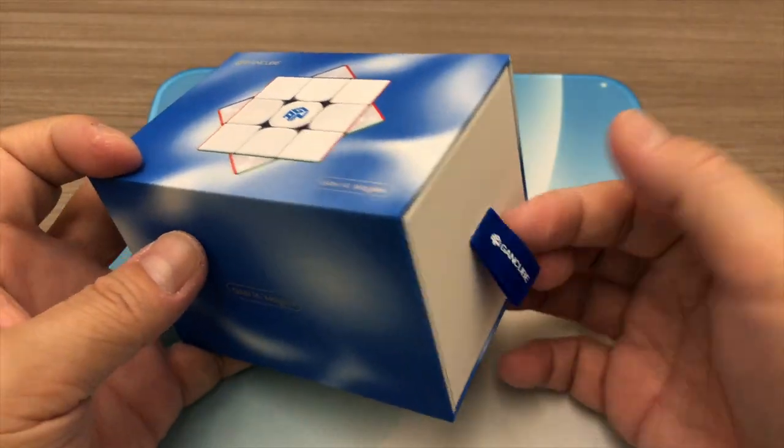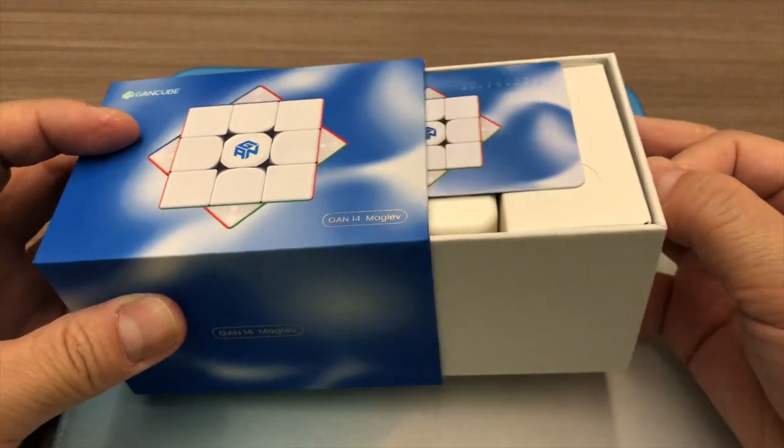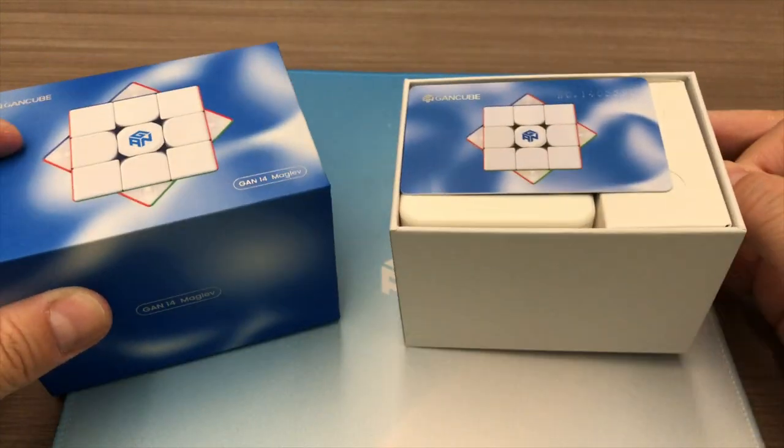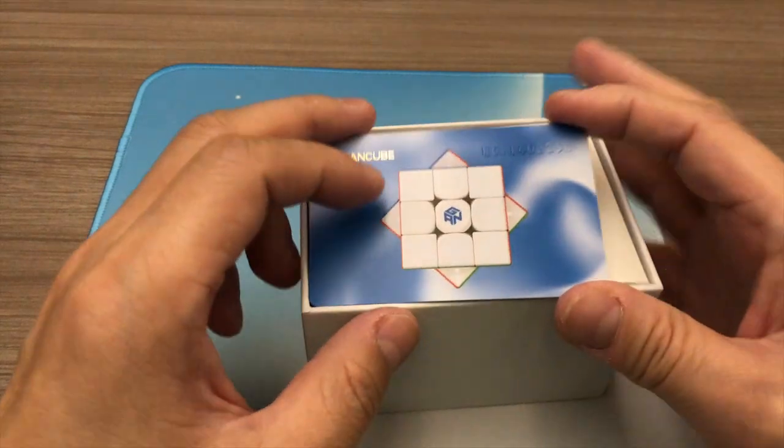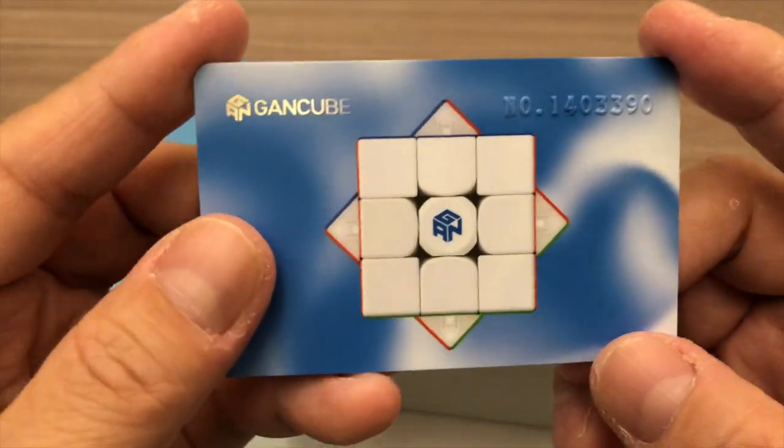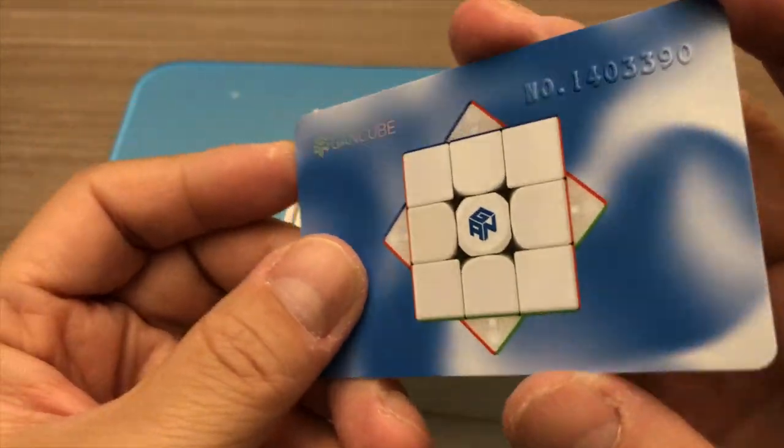Let's pull open the box and see what's inside. It has an ID card from GAN Cube.